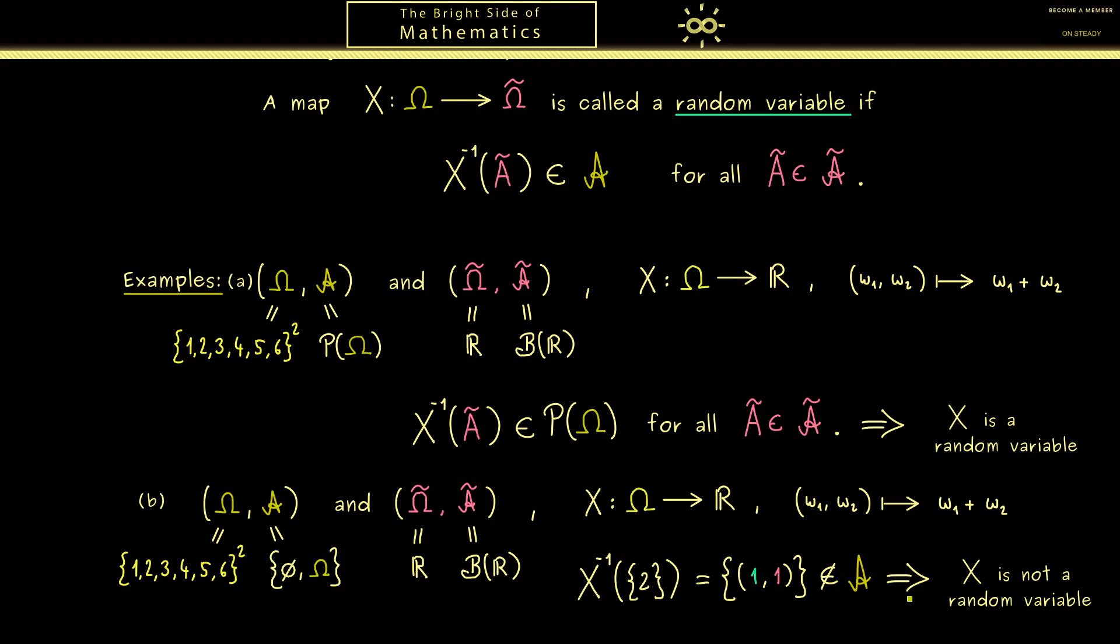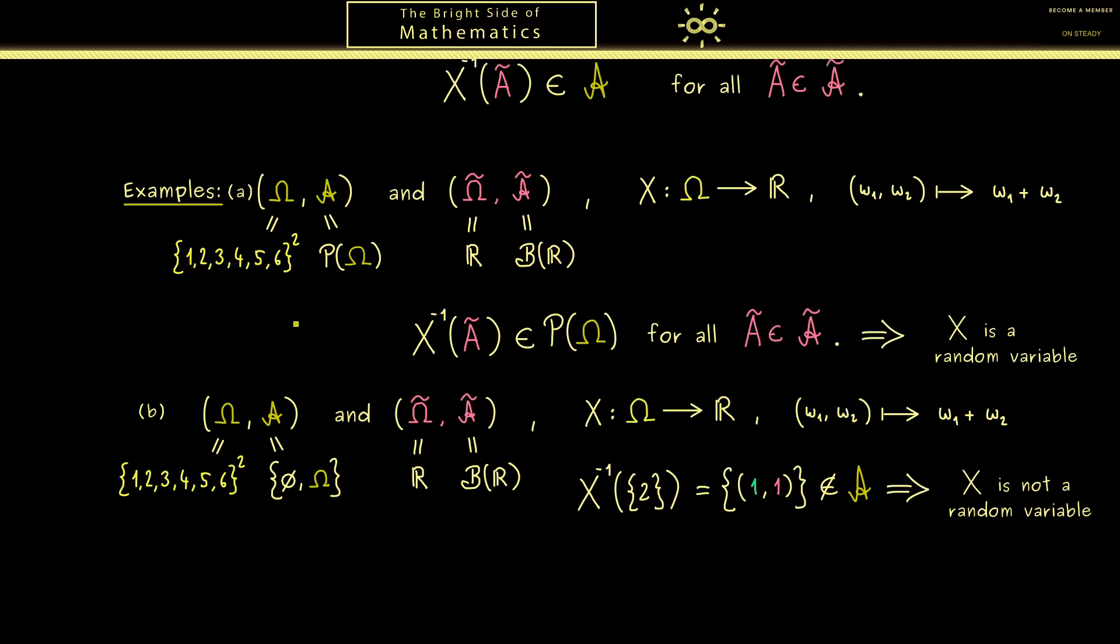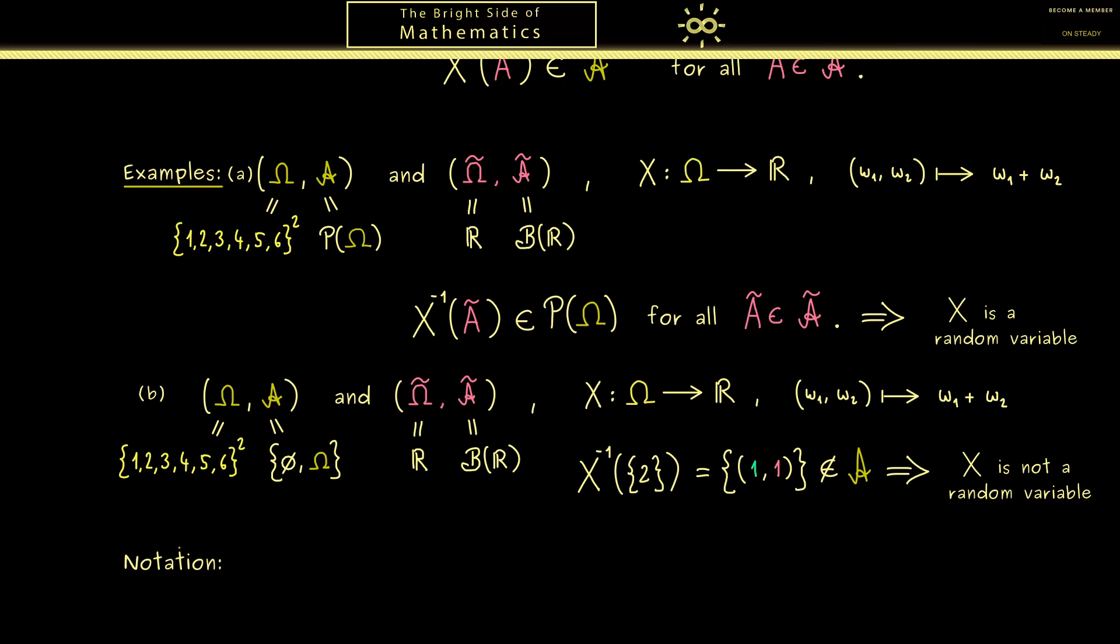And then we can conclude in this case X is not a random variable. Now in summary, what you should see here is random variables are not complicated at all. And indeed, most of the time the fact that we have a random variable is immediately given.